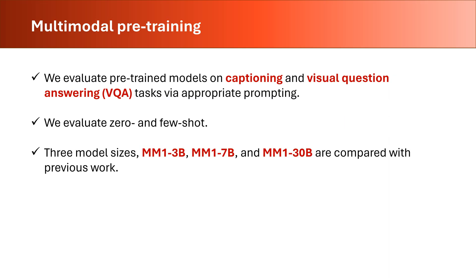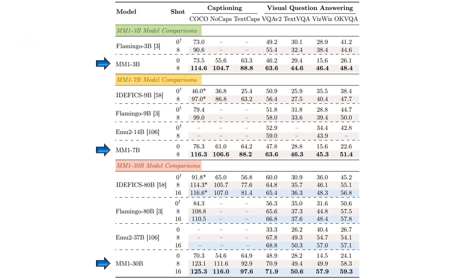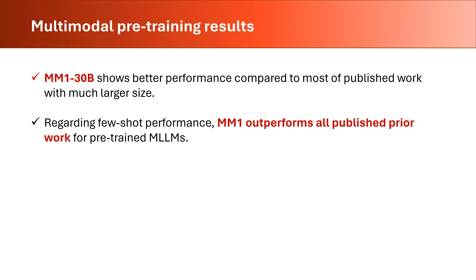MM1's pre-training results are a testament to its capabilities, outperforming existing models in tasks like captioning and visual question answering. We compare three versions of the MM1 model with previous work. In this table, we can see comparison results for three versions of the MM1 model with similar work. We note that even among its 3B, 7B, and 30B configurations, MM1 stands out, particularly in few-shot learning scenarios, showcasing its robust understanding across modalities. We can draw two major conclusions from this table. MM1 30B shows better performance compared to most published work with much larger size. Regarding few-shot performance, MM1 outperforms all published prior work for pre-trained multimodal LLMs.